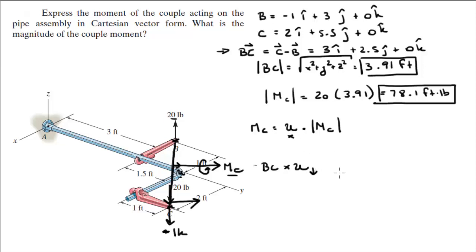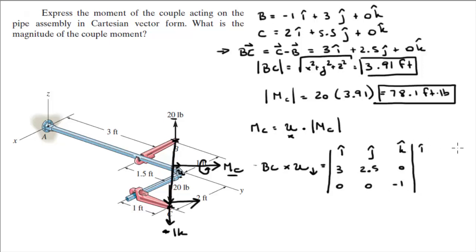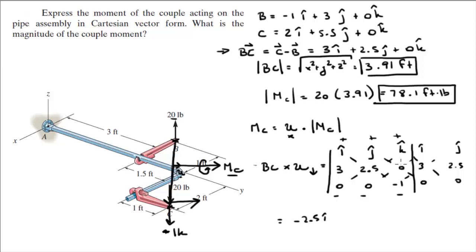We do the cross product BC × (−k̂). Setting up the determinant: BC = (3, 2.5, 0) and the downward unit vector = (0, 0, −1). Rewriting the first and second columns and computing: positive diagonals give −2.5i, zero, and zero; negative diagonals give 0, 0, and +3j. So the result is −2.5i + 3j. This gives us a vector pointing to the right, but it's not yet a unit vector.